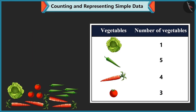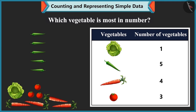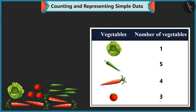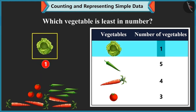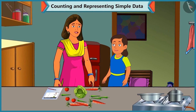Mummy asks which vegetable is most in number. Bubbly answers there are 5 chillies, so it is most. Mummy then asks which is least. Bubbly says there is 1 cabbage, so it is least in number. Mummy praises her.